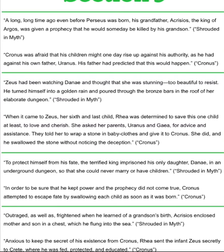So Zeus had been watching Danae and thought she was stunning—too beautiful to resist. He turned himself into a golden rain and poured through the bronze bars in the roof of her elaborate dungeon.